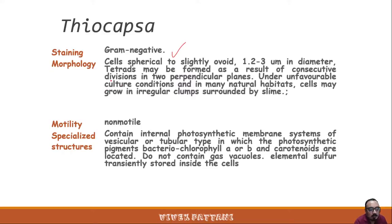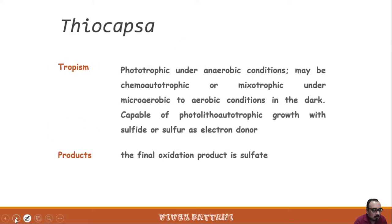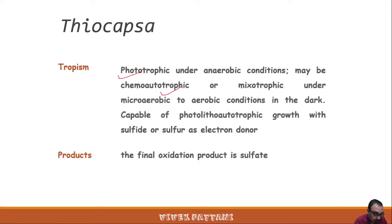Thiocapsa does not contain gas vacuoles, and elemental sulfur is transiently stored inside the cells. They are phototrophic and may be chemo-autotrophic or even mixotrophic. Mixotrophic organisms use both autotrophic and heterotrophic modes of nutrition.